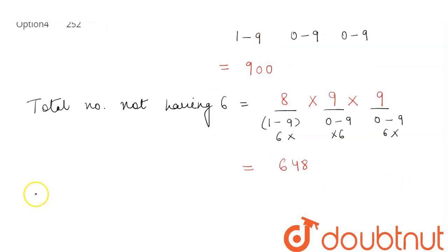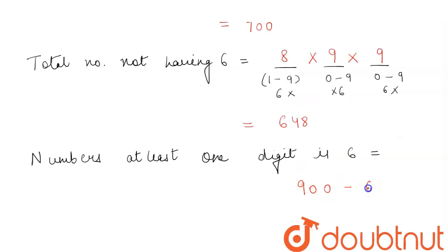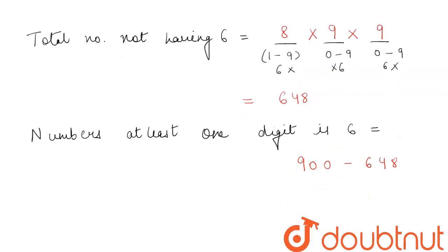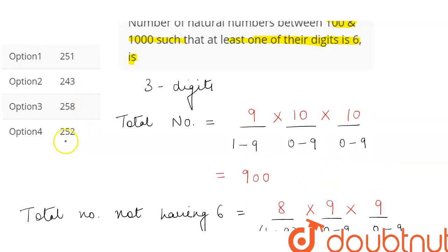So now we are to find the numbers where at least one digit is 6, and it will be equal to 900 minus 648, and this will come out to be equal to 252. So looking at our options, option number 4 becomes the correct answer.